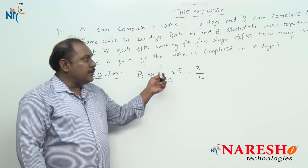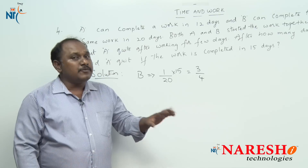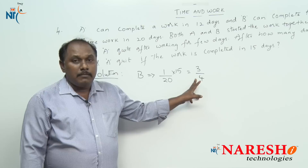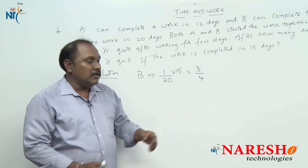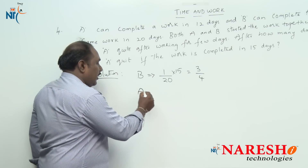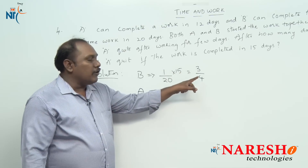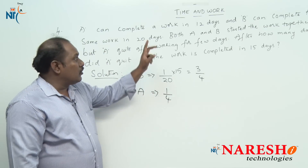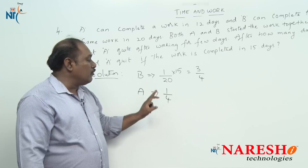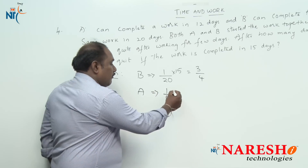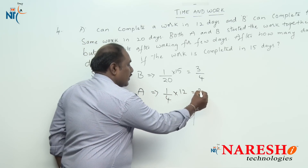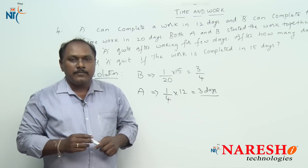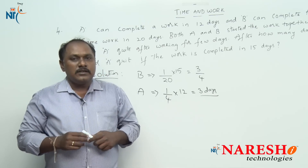B worked all 15 days and completed three fourths of the work, but the work is fully done — so A did the remaining one fourth. To complete the total work, A takes 12 days. To do one fourth of the work, he takes one fourth of 12, which is 3 days. So A worked for 3 days and then quit.